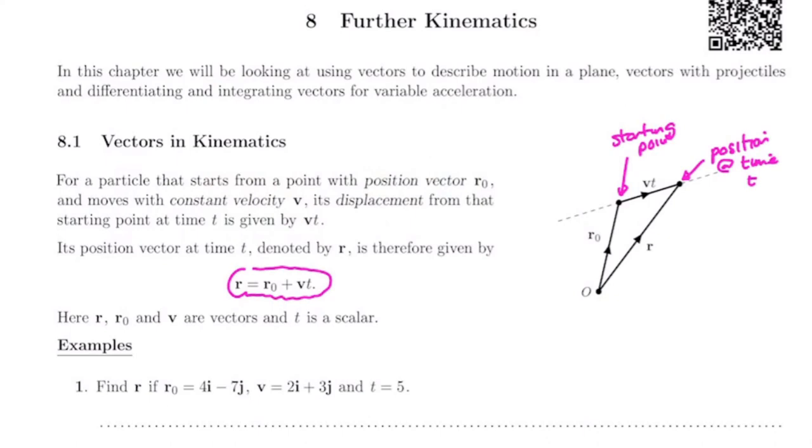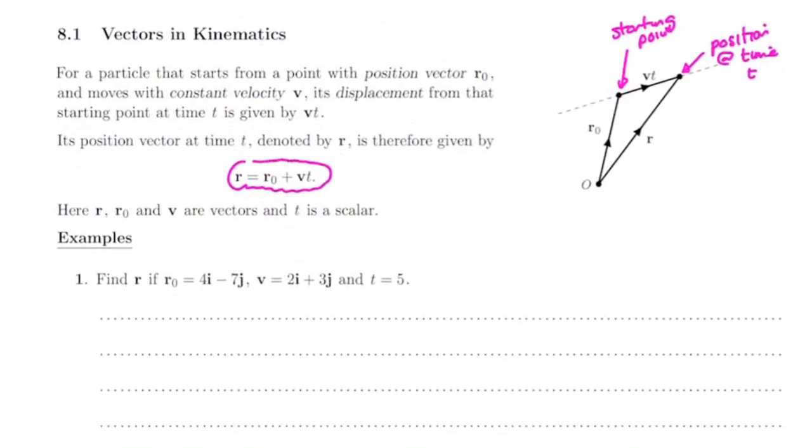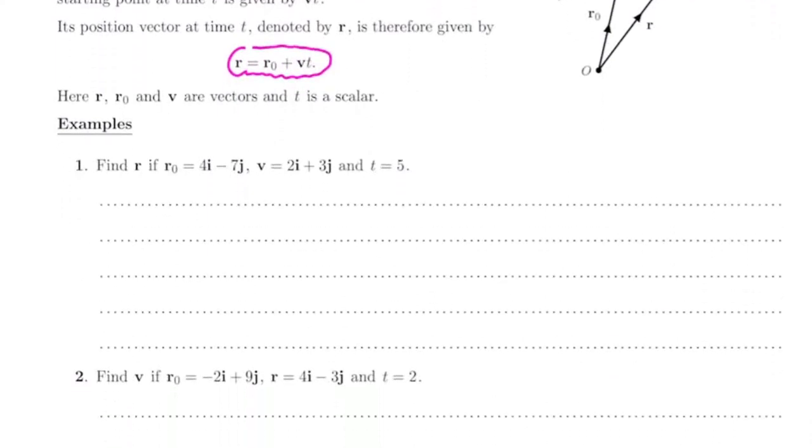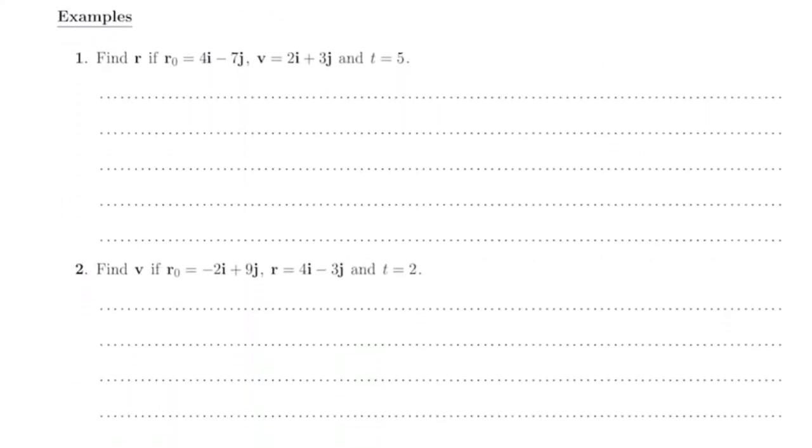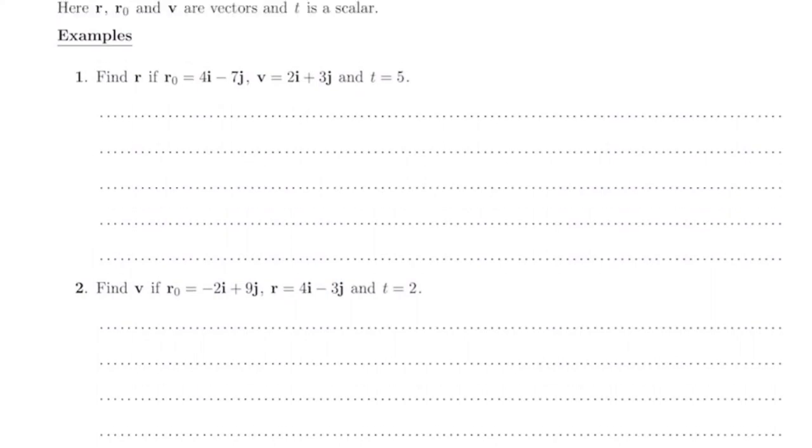This formula here, r equals r₀ plus vt, is quite important to commit to memory. It seems logical if you are so much from the origin and then you proceed in a straight line with a velocity over time, then you will end up at your position. We'll just have a little look at a couple of questions. Because it's vectors we're going to use both i's and j's and column vectors, so I'll just remind you about your column vectors.